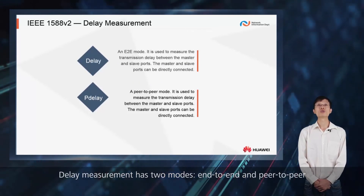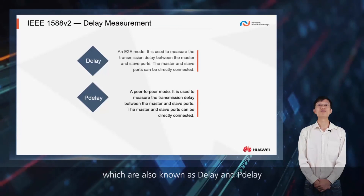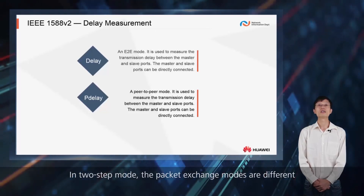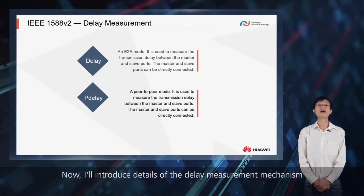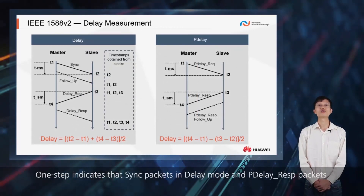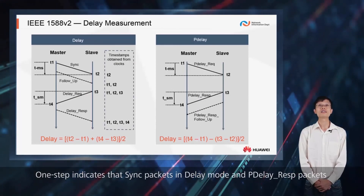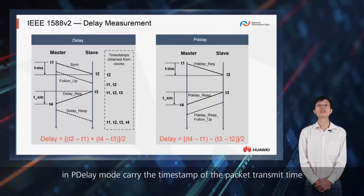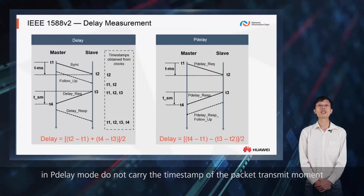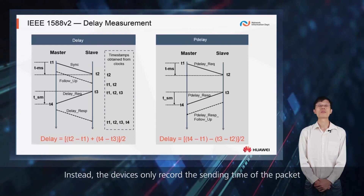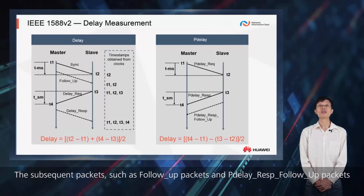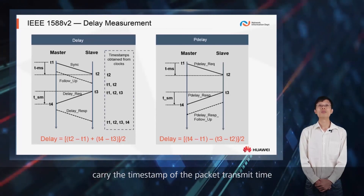Delay measurement has two modes: end-to-end and peer-to-peer, also known as delay and p-delay. In two-step mode, the packet exchange modes are different. One-step indicates that sync packets in delay mode and p-delay response packets in p-delay mode carry the timestamp of the packet transmit time. Two-step indicates that sync packets and p-delay response packets do not carry the timestamp of the packet transmit moment; instead, the devices only record the sending time. Subsequent packets, such as follow-up packets and p-delay response follow-up packets, carry the timestamp of the packet transmit time.